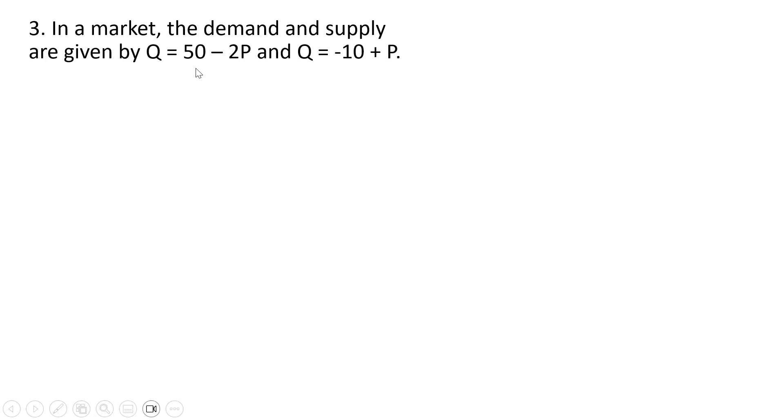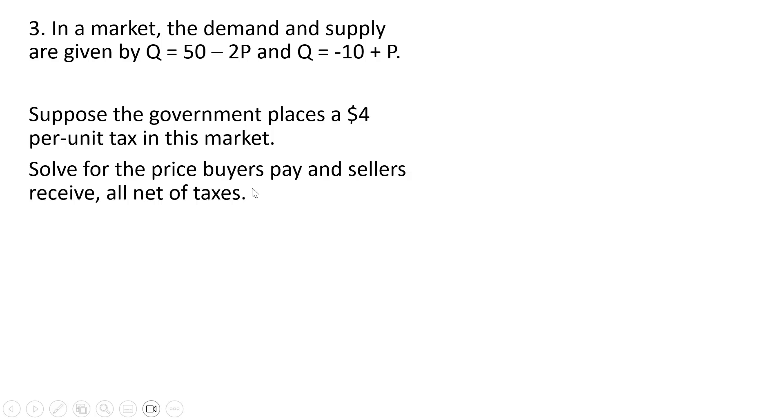Question 3. In a market, the demand and supply are given by the following. Suppose the government places a $4 per unit tax in this market. Solve for the price buyers pay and sellers receive, all net of taxes.